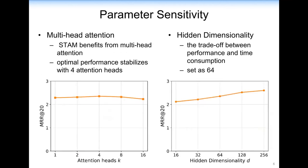We also study two important hyperparameters: the number of heads for multi-head attention and the hidden dimensions. In general, STM benefits from multi-head attention for spatial-temporal embedding learning, and optimal performance stabilizes with four attention heads. For hidden dimensions, performance tends to converge with increasing embedding dimension. A larger dimension yields better performance, but leads to longer training time, so we need to find a proper dimension to balance the trade-off between performance and time consumption.